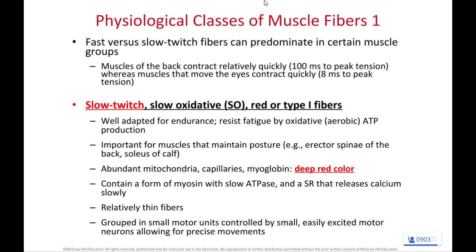My favorite analogy is white meat versus dark meat. If you ever go buy chicken, they always ask you, do you want white meat or dark meat? The differences between the white meat and the dark meat are directly correlated to muscle fiber type. So let's talk about the dark meat first — the slow twitch fibers.